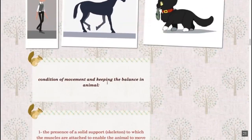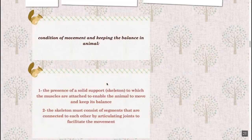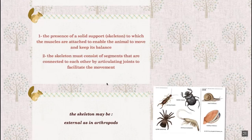For movement to occur, certain conditions must be met for movement and keeping the balance in animals. First, there must be a solid support - the skeleton. Like the bones in humans, which we studied in part one on support. Therefore: presence of solid support, the skeleton or bones, attached to muscles which perform contraction and relaxation, which creates movement for the bones. The skeleton must consist of segments that are connected to each other by articulating joints to facilitate movement.